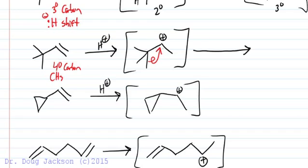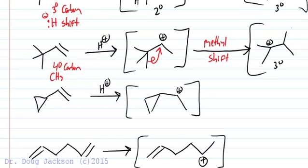I shift that methyl to form a tertiary cation again from a less stable secondary carbocation. Again, there's a driving force of stability there, more stable cation.